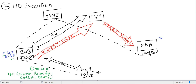Source eNodeB is essentially telling the UE to detach from it and providing the details needed to access the neighboring or target eNodeB. The UE detaches from source eNodeB, so the DRB is removed — no more DRB is present between source eNodeB and UE. Signaling is also removed, meaning everything at the radio layer between source eNodeB and UE has been removed.